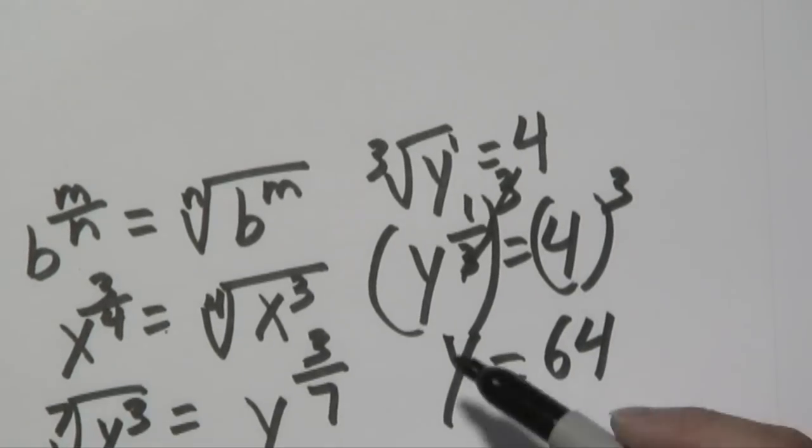So, there are many other examples out there, but I hope this will get you started. I'm Jimmy Chang, and that's how you cancel radicals with exponents.